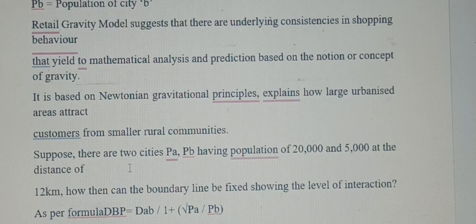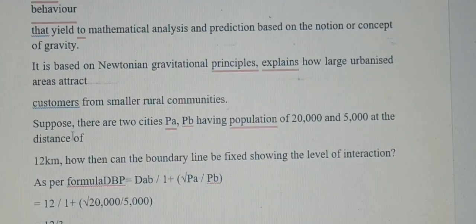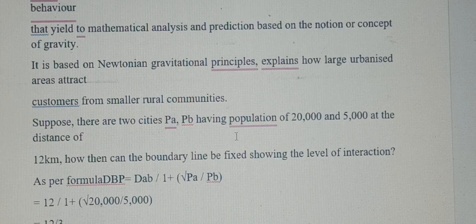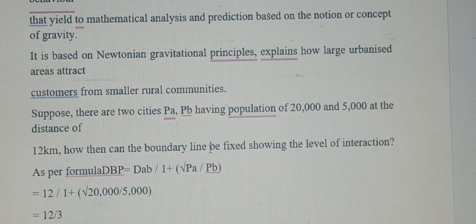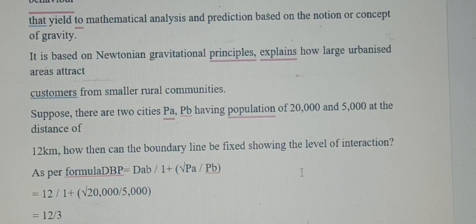Suppose there are two cities, Pa and Pb, having populations of 20,000 and 5,000 at a distance of 12 km. How can the boundary line be fixed showing the level of interaction?